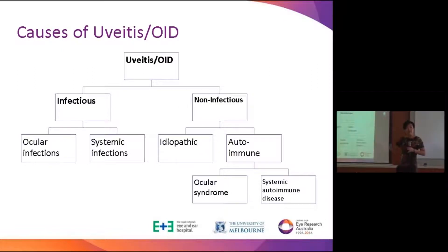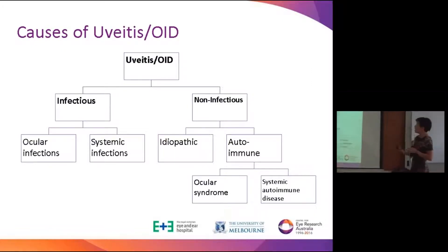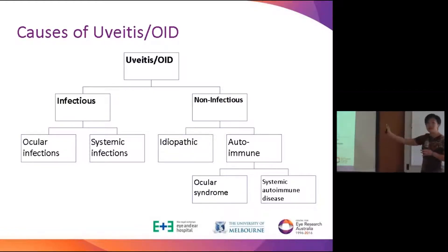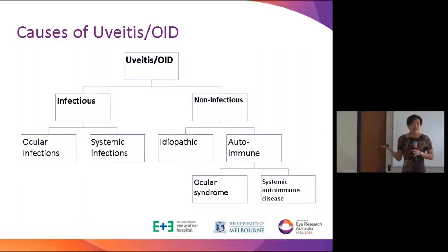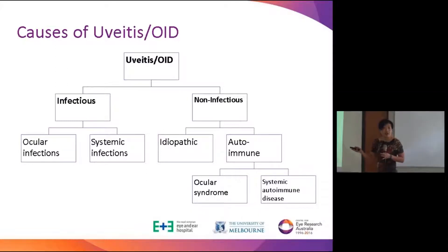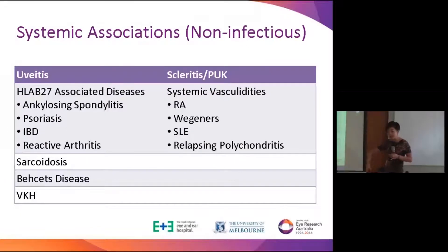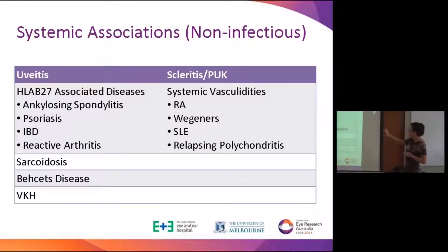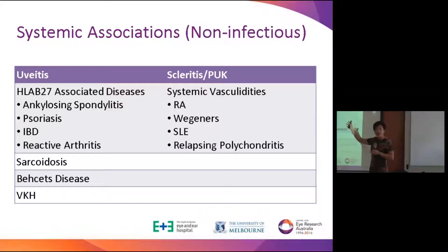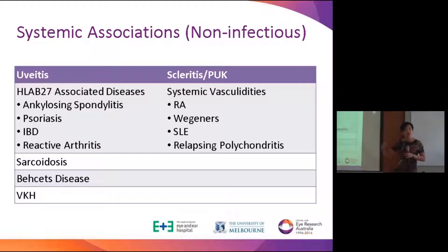The causes are approached the same way as any systemic disease: infectious versus non-infectious, and ocular versus systemic, autoimmune versus idiopathic. The anatomical definition matters because the diseases you look for depend on where the inflammation is. Uveitis is typically associated with spondyloarthropathy for anterior uveitis, and sarcoidosis, Behçet's disease, and Vogt-Koyanagi-Harada disease for posterior. Scleritis is associated with systemic vasculitides — rheumatoid arthritis, granulomatous polyangiitis, lupus, and relapsing polychondritis.